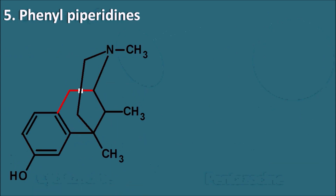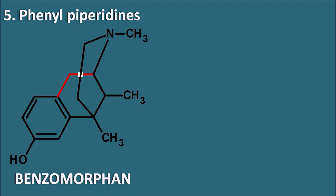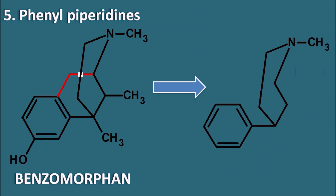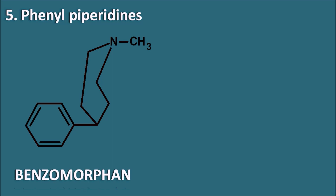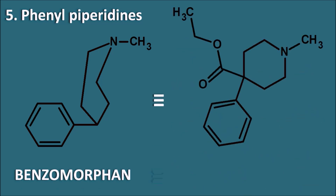Phenylpiperidines are obtained from benzomorphans by opening the ring connecting the piperidine to the phenyl ring. The resulting structure has a phenyl ring attached to a piperidine — two ring systems. Pethidine (also called meperidine) is a phenylpiperidine with a methyl group on the nitrogen and an ethyl carboxylate at the 4th position.